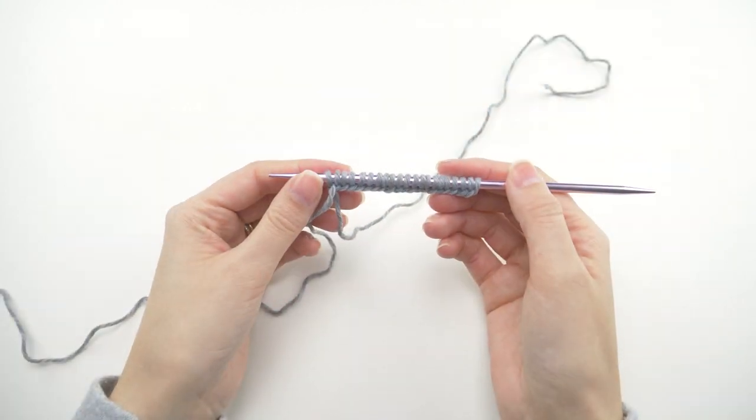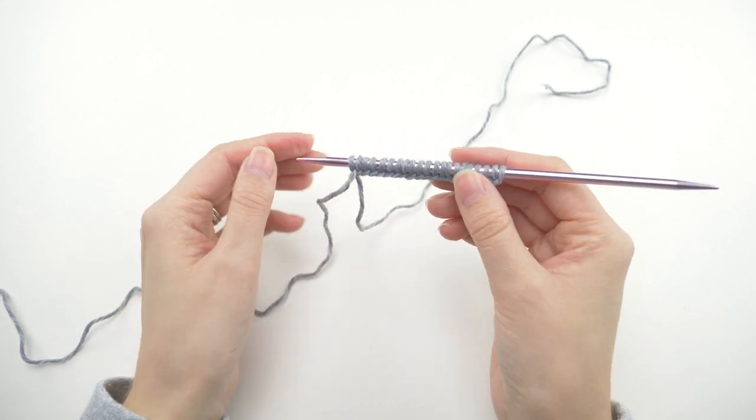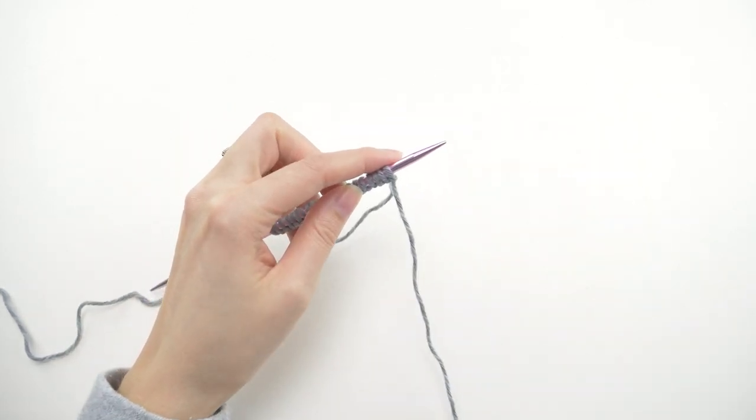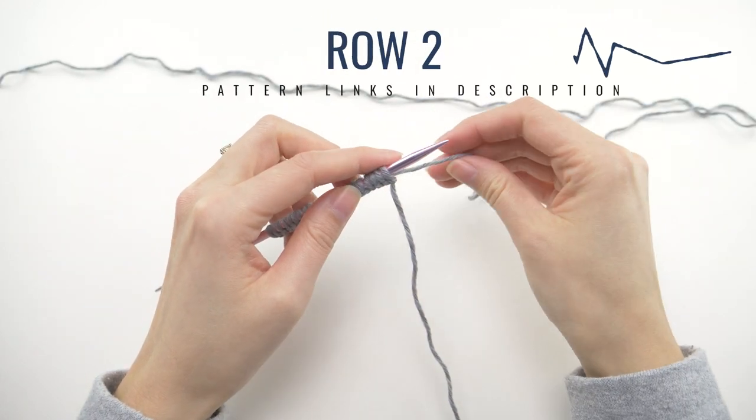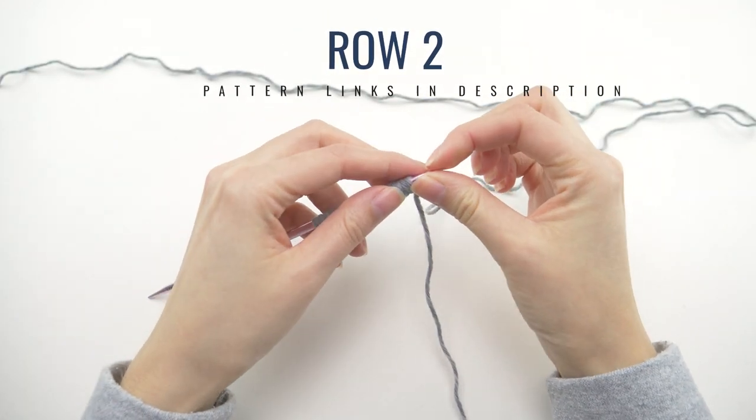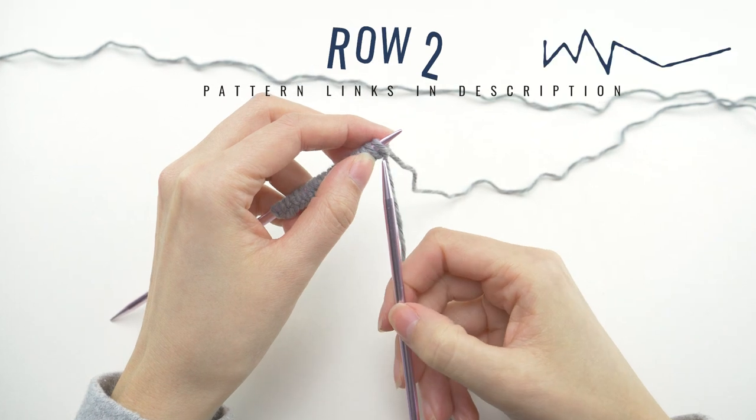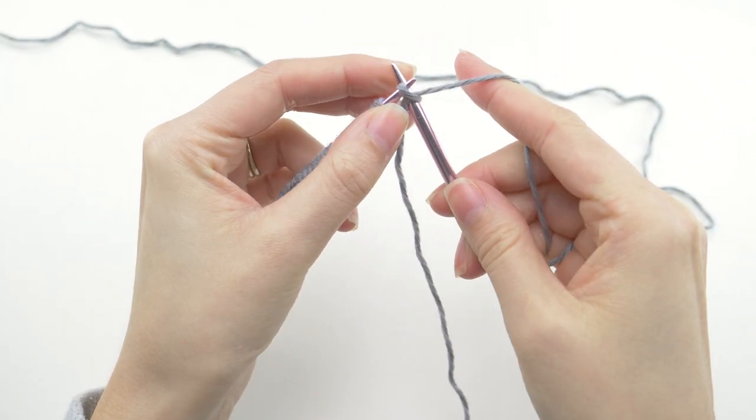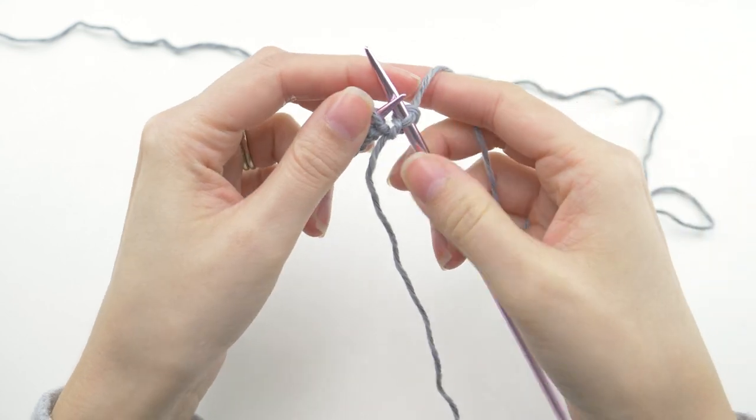Okay, when you have 71 stitches cast on, go ahead and flip your work, and just pull the tail out of the way so you don't accidentally knit with it, and go ahead and knit the first stitch. Now you'll always knit the first stitch of every row, so you can just commit that to memory.